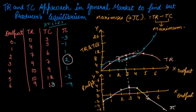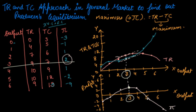The profit is maximum when you draw the two tangents on your TR and TC curves — that is at point 3. At output 3 you have the maximum profit, and this is the point of equilibrium. So the producer is at its equilibrium when it produces 3 units of the commodity, earning maximum profit.